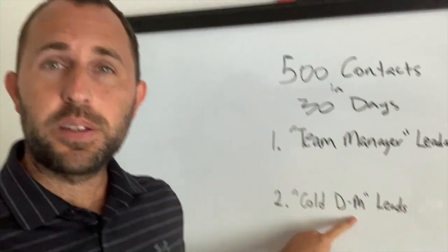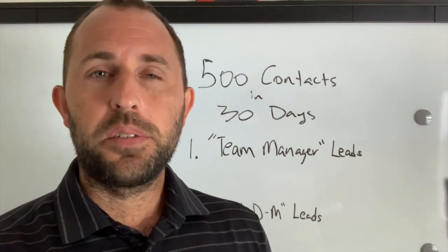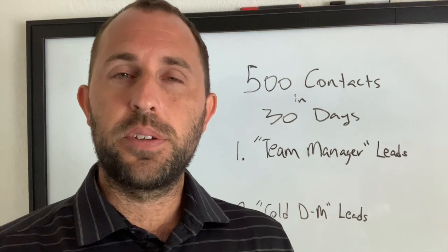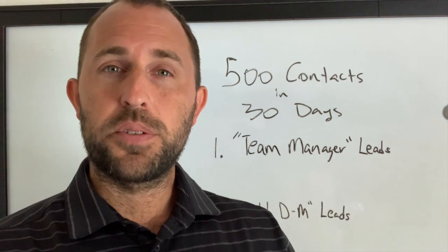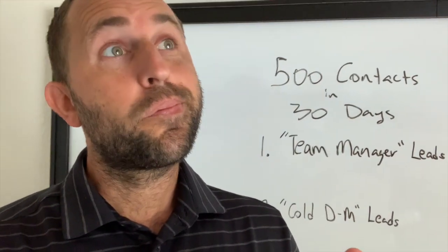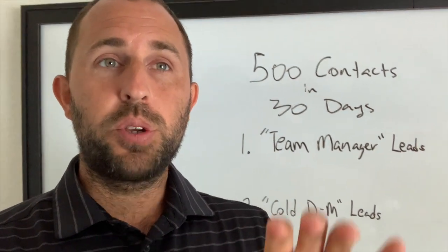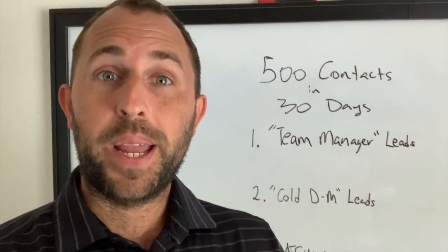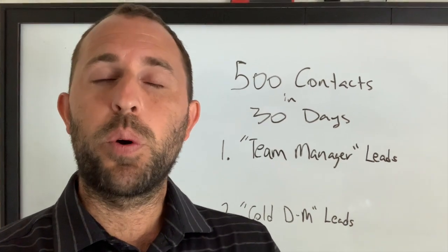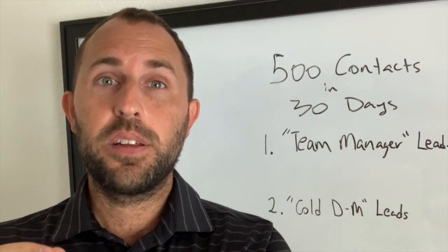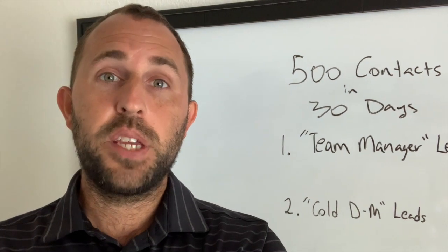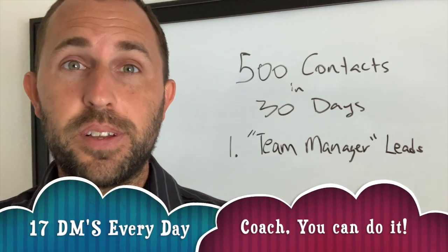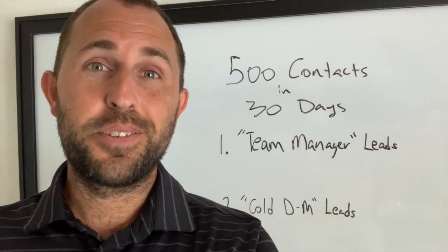Simultaneously, this should be happening too — number two is cold DM leads. This can be done on Instagram or Facebook; I don't care what platform you use, it only works if you're consistent. If you spend about one to two hours researching your area, looking at the different fields, courts, or schools in your area, you can build a huge spreadsheet of parents who have kids that play the sport you train. Create a spreadsheet of 500 people — not that hard. Take 500 divided by 30, and that's how many DMs you should be sending per day. That is not that difficult.